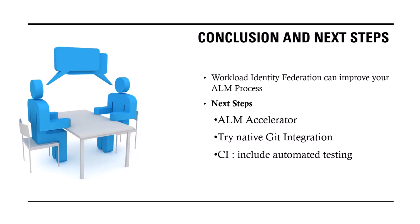For next steps, there are a few new tools and features within Power Platform that I need to try out: one is the ALM accelerator, the native Git integration of Power Platform solutions directly to a repository — which would remove the need for a continuous integration pipeline — and automated testing, which is always a good addition to your ALM. That's all from me. Thank you very much for your attention.